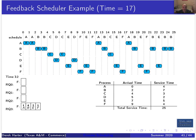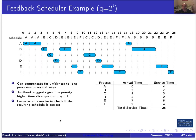At time seventeen, A, B, E, and F are down at priority level three, and A and F exit the system at that point. At time twenty-one, B has three remaining and E has one remaining at priority level four. B and E run, E exits, and then B finishes off. That's the feedback scheduler.